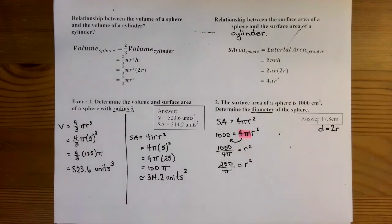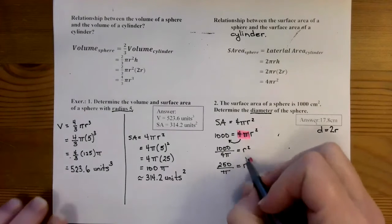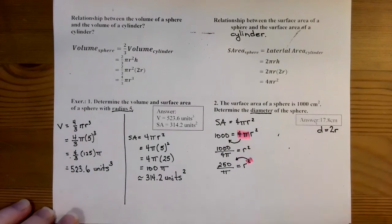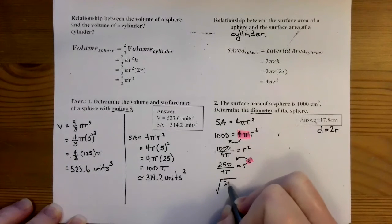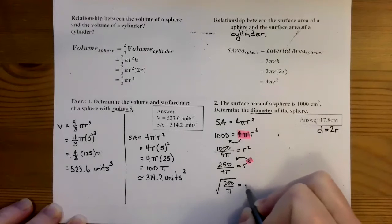So now in order to figure out what r is, I need to take the squared to the other side. And when I take a square to the other side, I know that the opposite operation is square rooting. So I'm going to take the square root of 250 over π, and that's going to be equal to r.